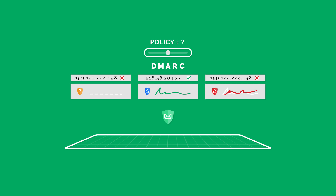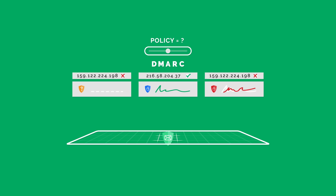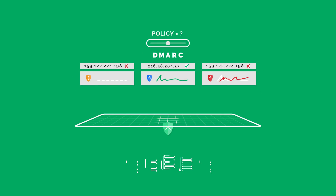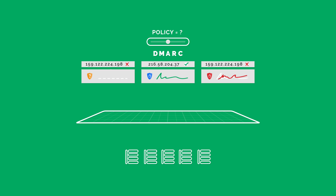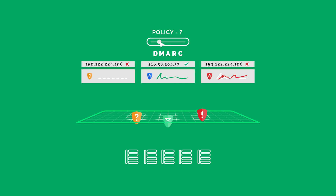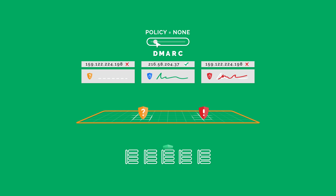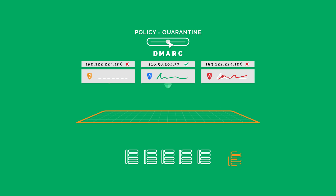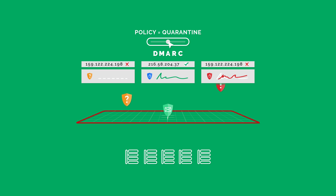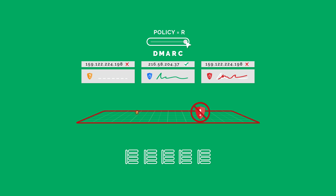With DMARC, you can instruct receiving servers on how to deal with emails that use your domain by setting your DMARC policy. Policy none: accept all email. Policy quarantine: send email that fails validation to spam. Policy reject: actively reject all unauthorized email.